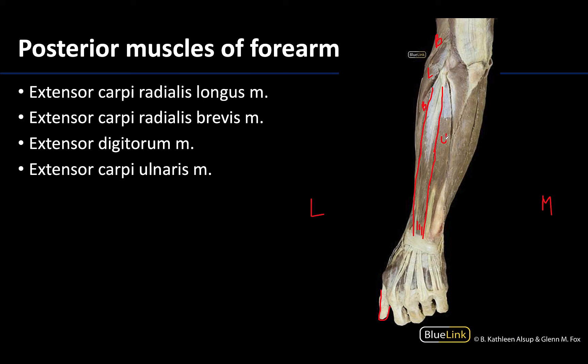Right next to the extensor digitorum, what I have labeled with the U, will be the extensor carpi ulnaris — the medial-most muscle in this posterior compartment.